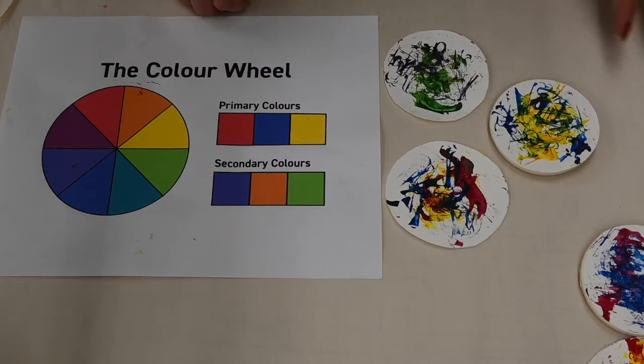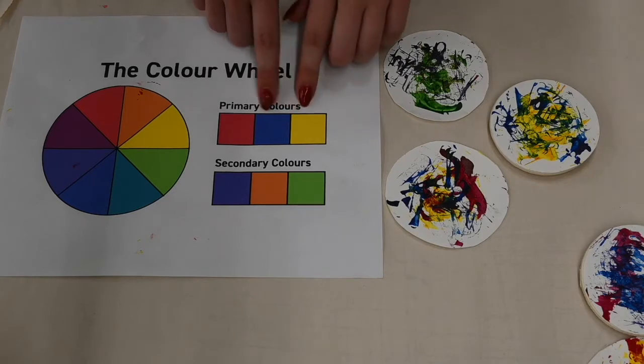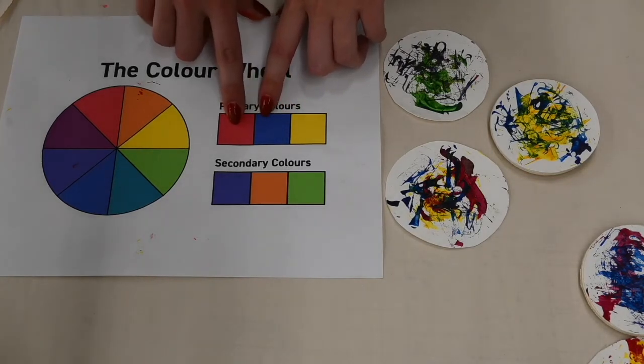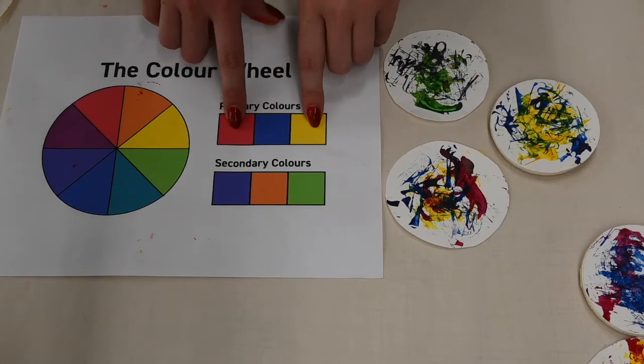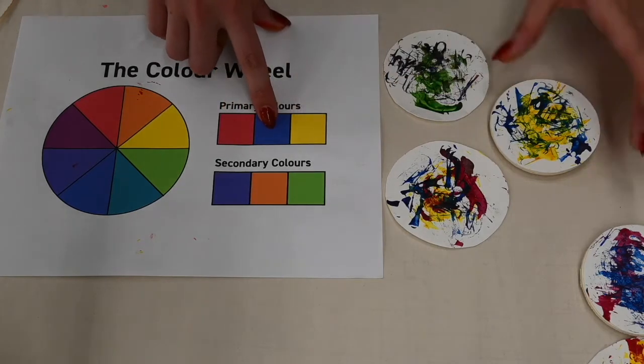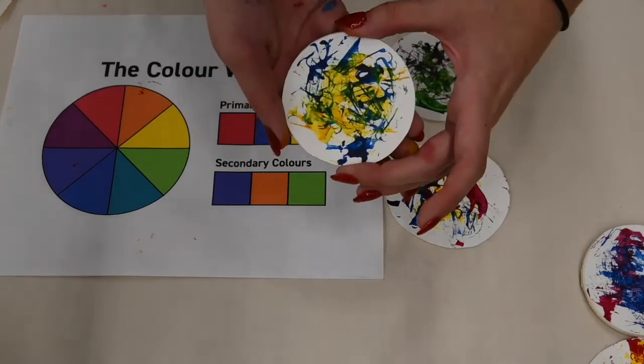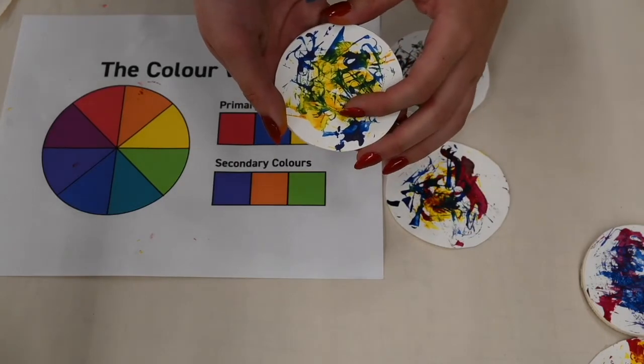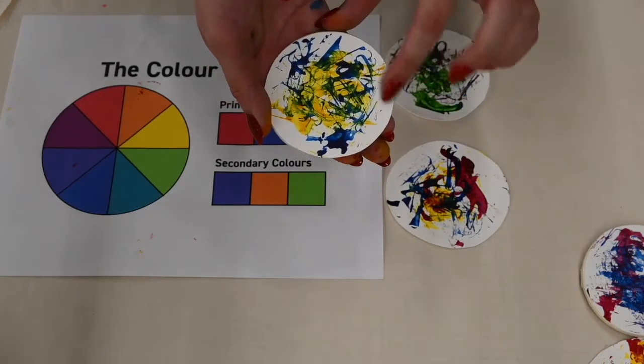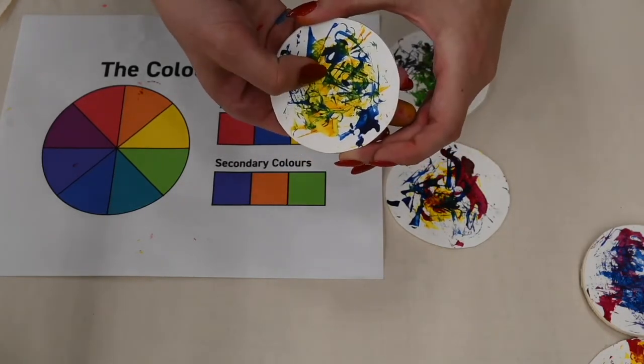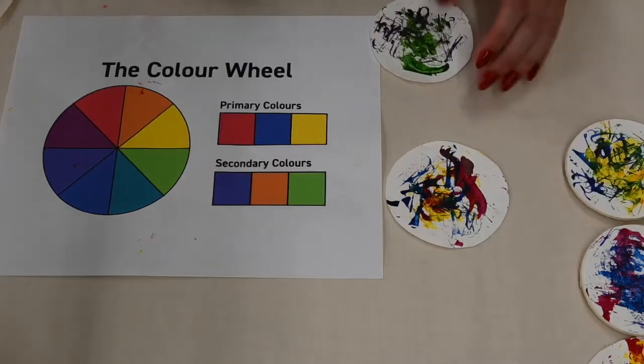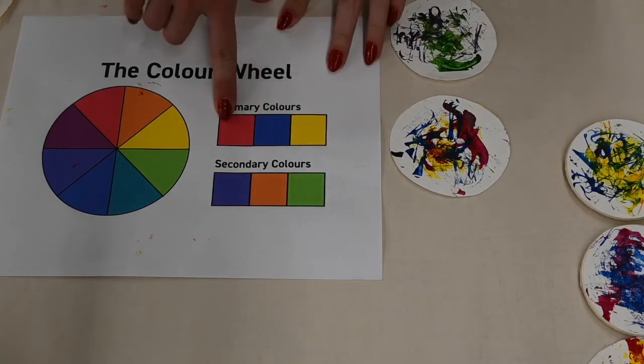Next I wanted to do our remaining primary colors. So we already used our reds and blues, our reds and yellows. So now we have blue and yellow left. So that was this one. I started with my yellow, added some blue. I have beautiful pops of green. Next I decided to do all three primary colors.